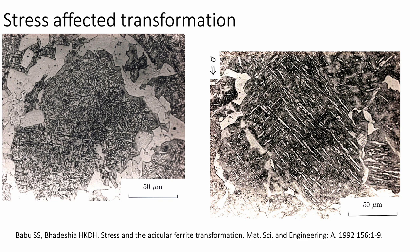Another consequence of the shape deformation — because the acicular ferrite transformation is not just a change in crystal structure but also a physical deformation that you can see with your own eyes — is that if you transform your material under the influence of a stress, then only those plates which tend to relieve that stress by their deformation will form. This is stress-free transformation where you can see the acicular ferrite pointing in many different directions, and here we have transformed under the influence of a stress and you can see that the plates are highly aligned roughly at 45 degrees, because those are the planes on which you get the maximum shear stress. So the influence of stress is to make a more or less random microstructure into one that is aligned.